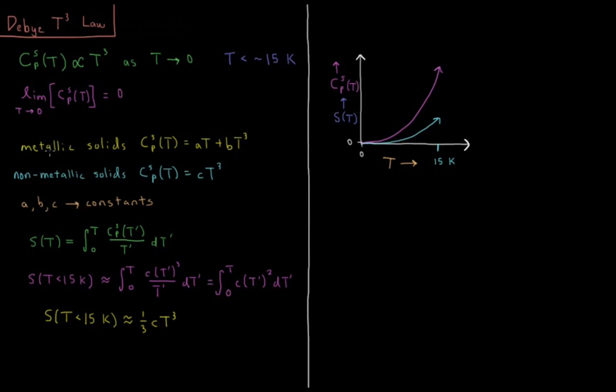For systems called metallic solids, things generally composed out of metals that can conduct electrons very well, the Debye law says that the constant pressure heat capacity of those solids is equal to a constant times temperature plus another constant times temperature cubed.